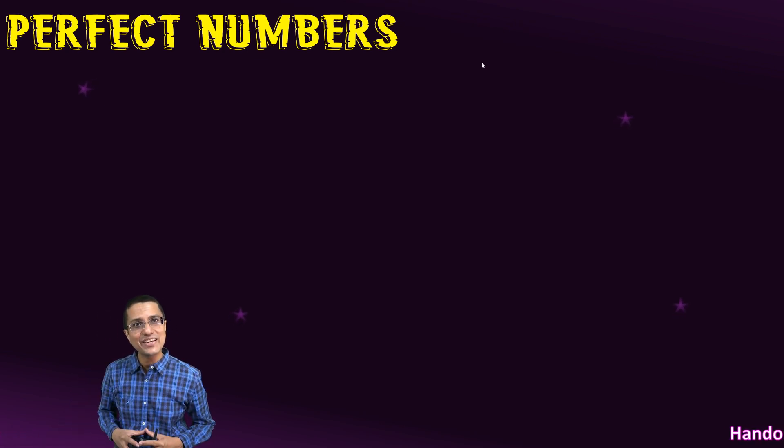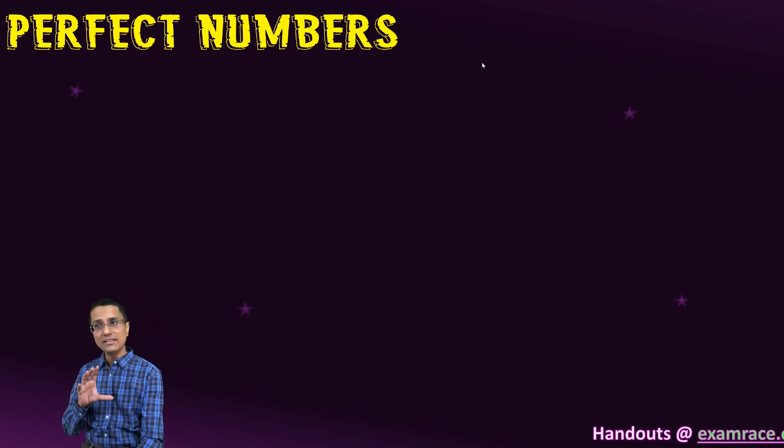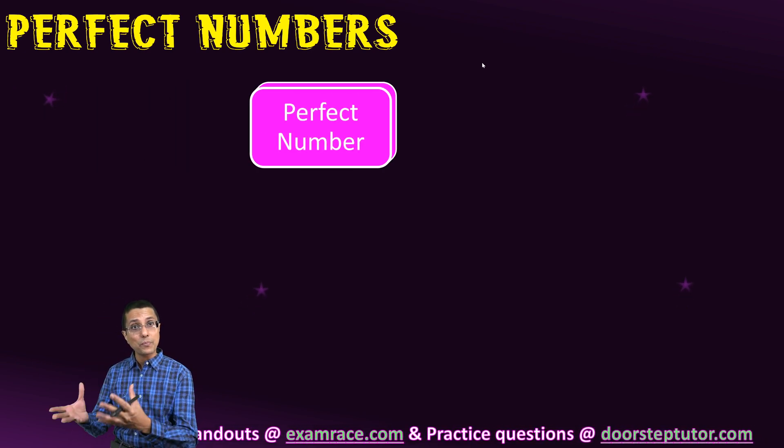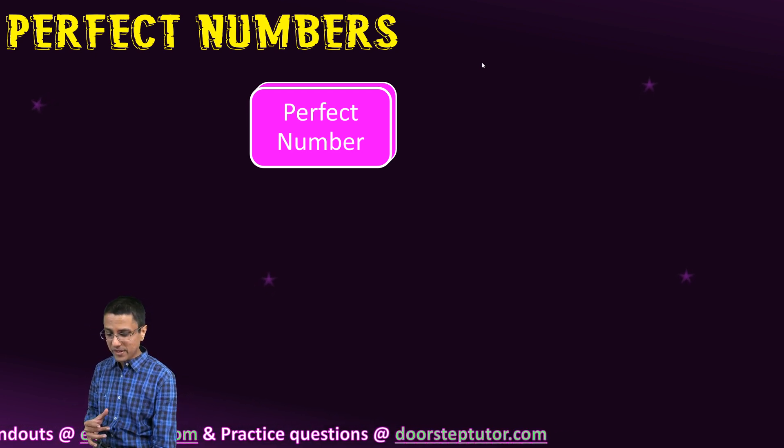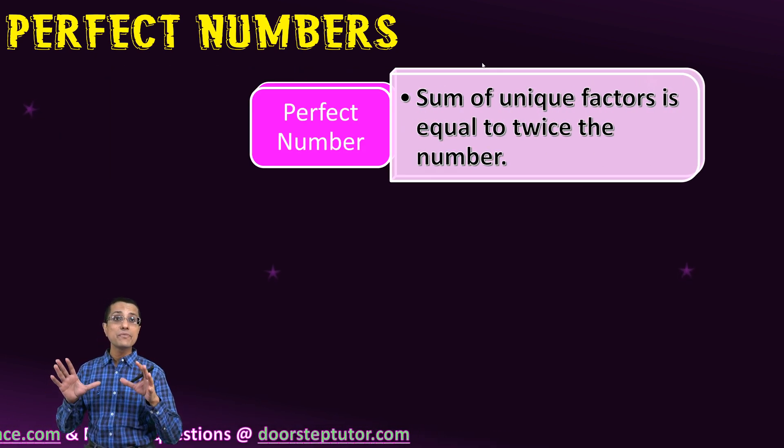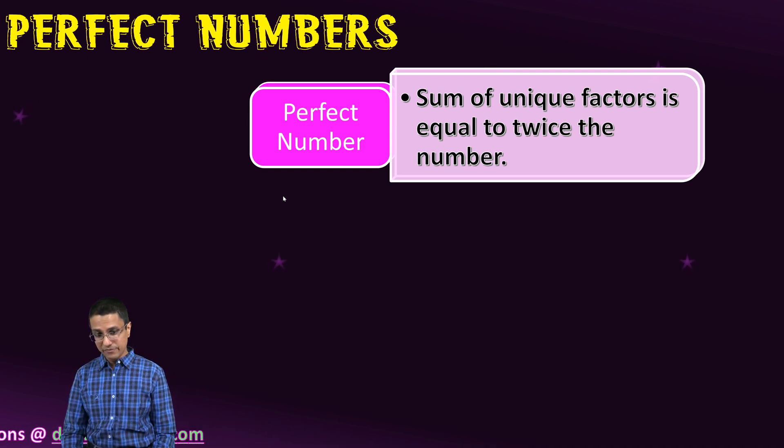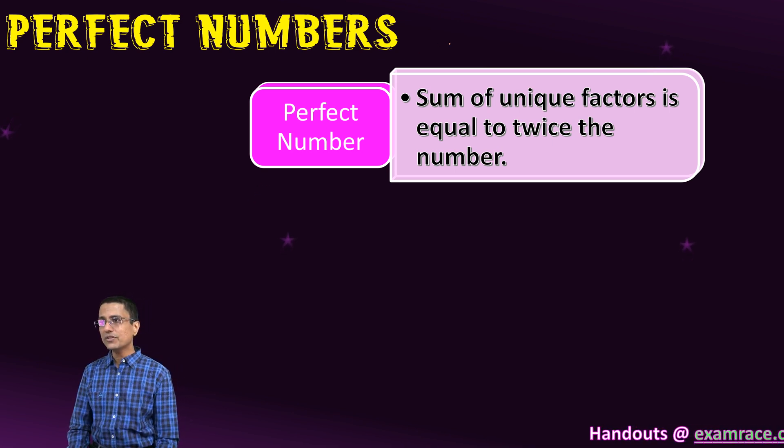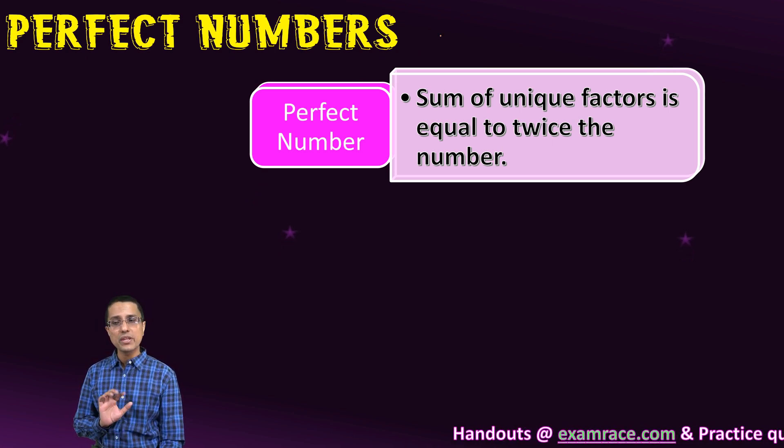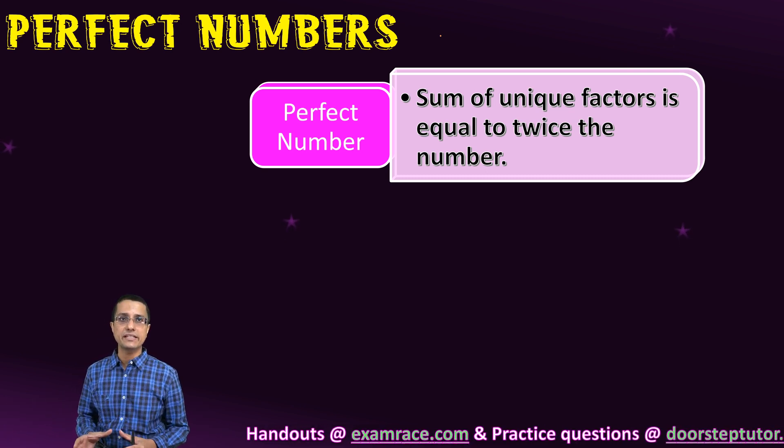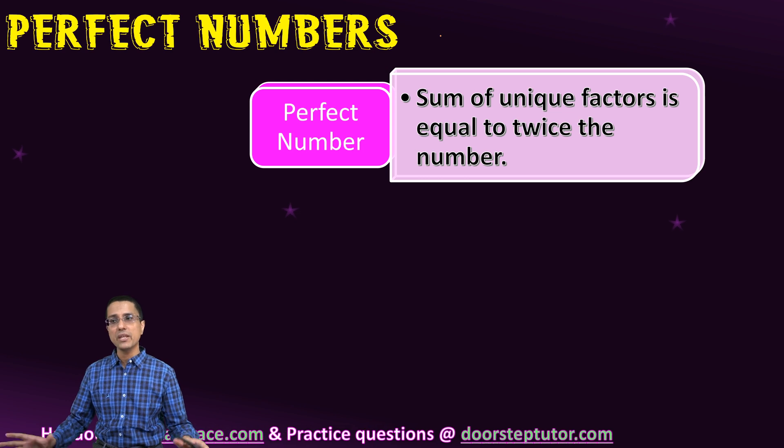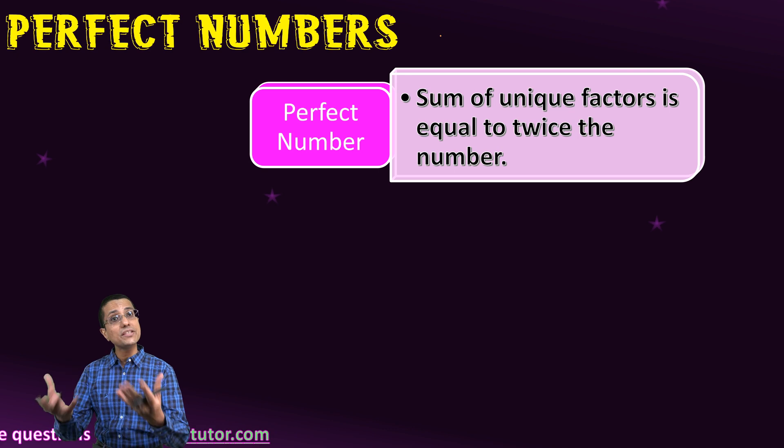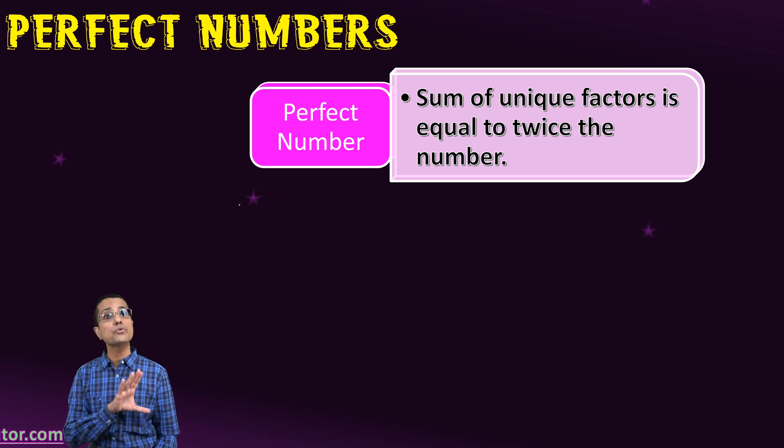Let's look at the very interesting property of numbers called perfect numbers. I'm very interested in such properties of numbers in number theory, particularly properties related to factors. This will develop your interest in factors, prime factors, and factorization. For certain numbers, interestingly, if I add together all their factors, that sum equals twice the number. This is true for several numbers.